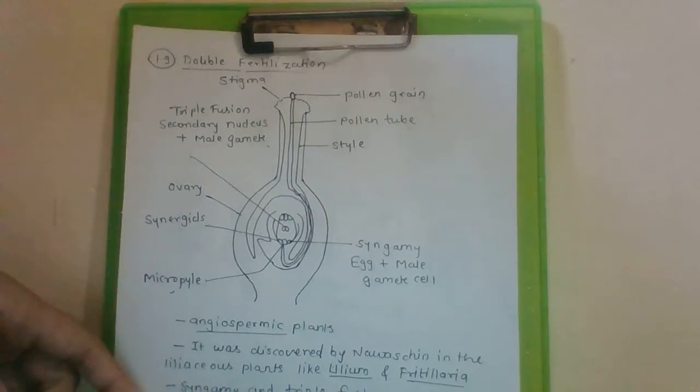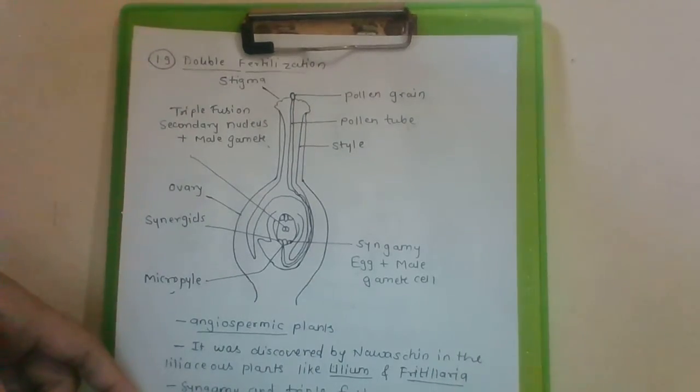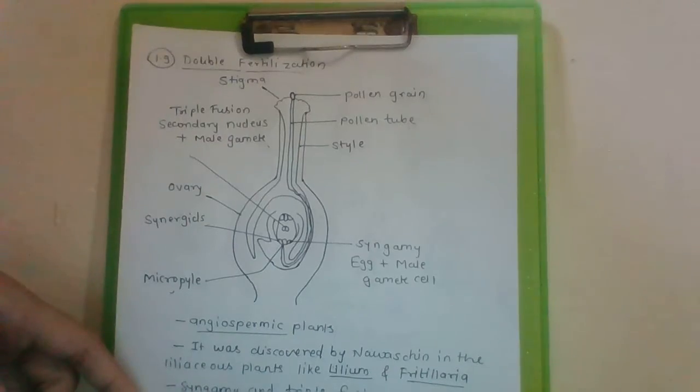This zygote develops into an embryo. Syngamy is type of generative fertilization, whereas triple fusion is type of vegetative fertilization. Both the male gametes participate and therefore it is described as or called double fertilization.